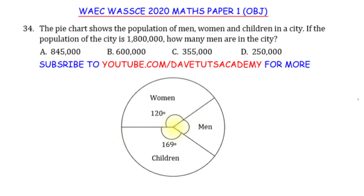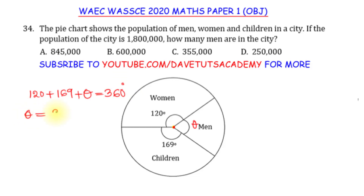By reason of understanding of angles at a point, we know that the angles at a point add up to 360 degrees. So we can say 120 degrees plus 169 degrees — if I call this theta, the angle for men — plus theta, the sum of the three will be 360 degrees. So theta will be 360 minus the sum of 120 and 169, which gives us 289.